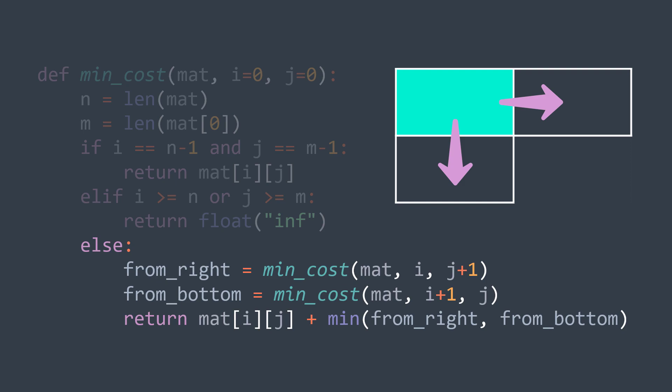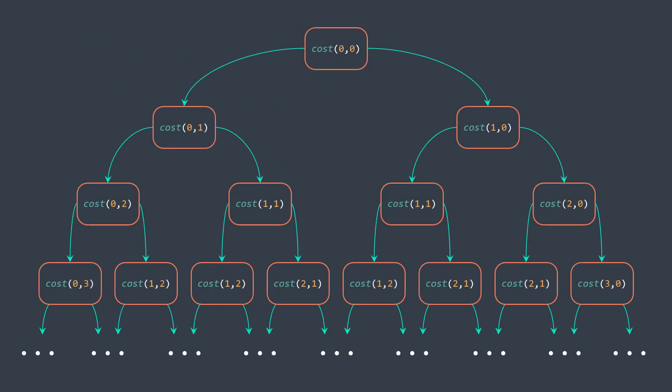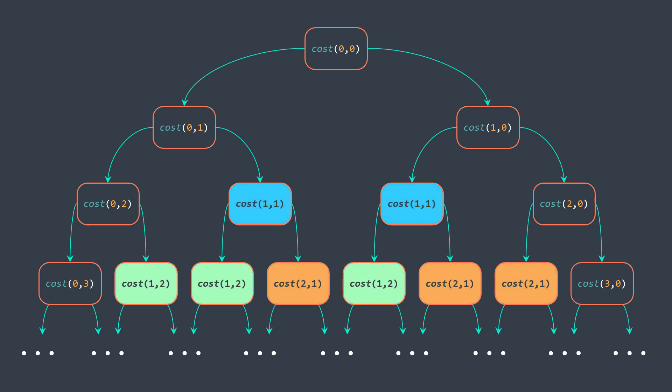This solution works, but like the non-optimized recursive Fibonacci solution, it has an exponential time complexity. Looking at the recursion tree, we can notice many repeated recursive calls — we have overlapping subproblems — and we are doing the same work over and over uselessly. Here comes dynamic programming to fix this.